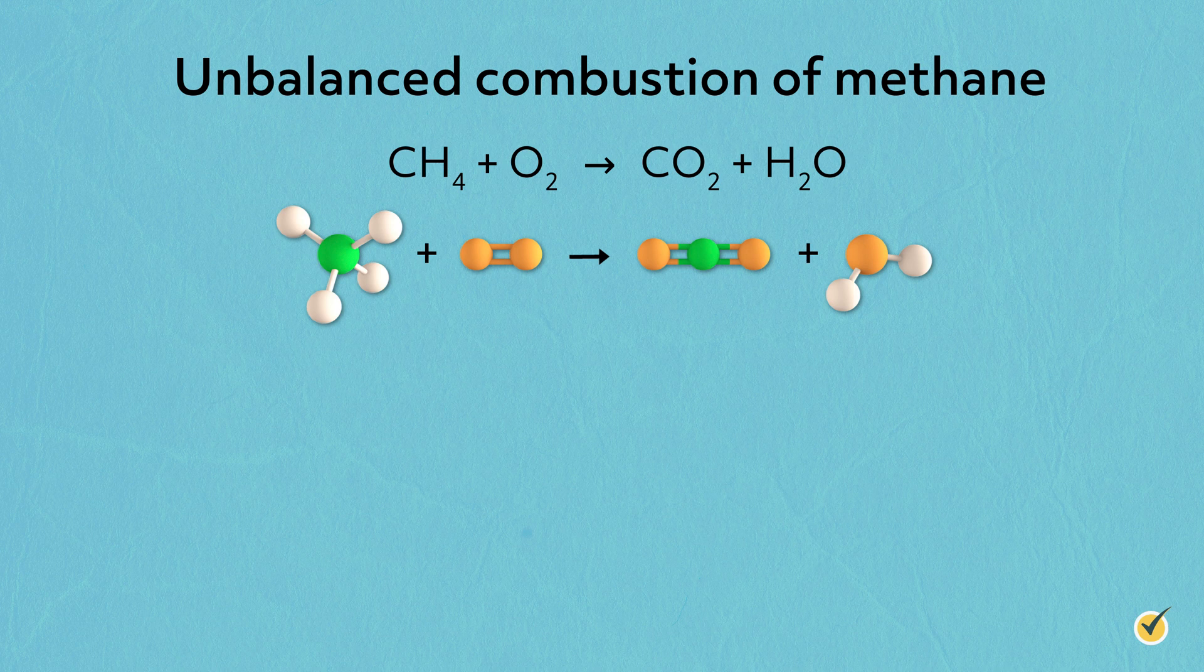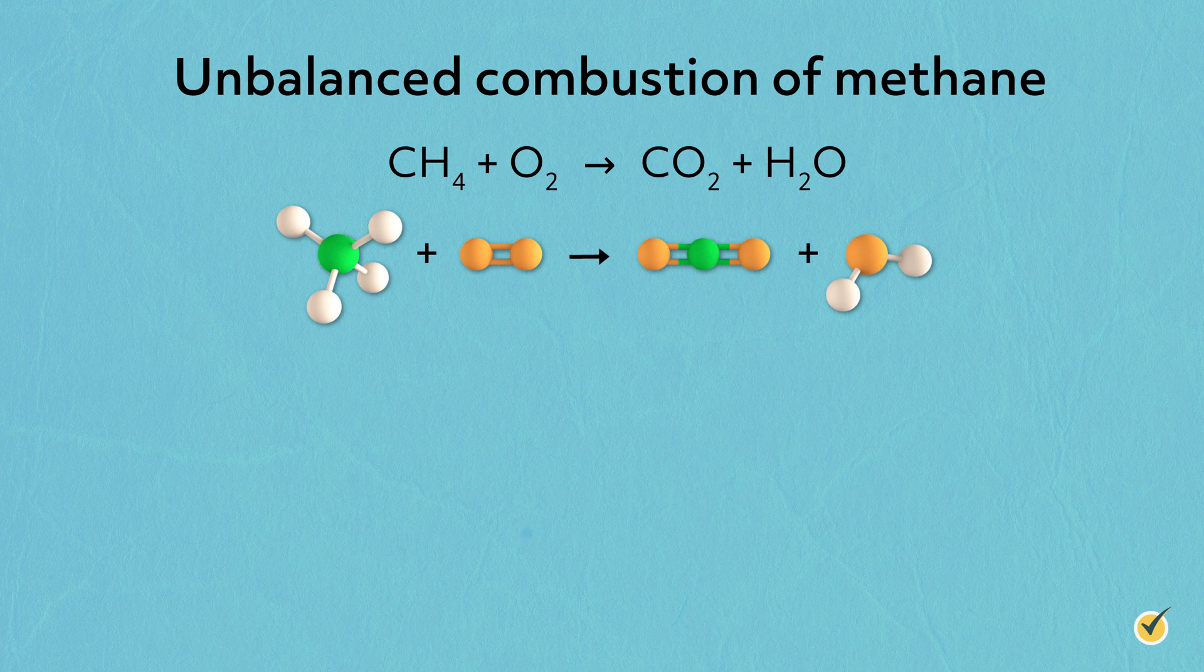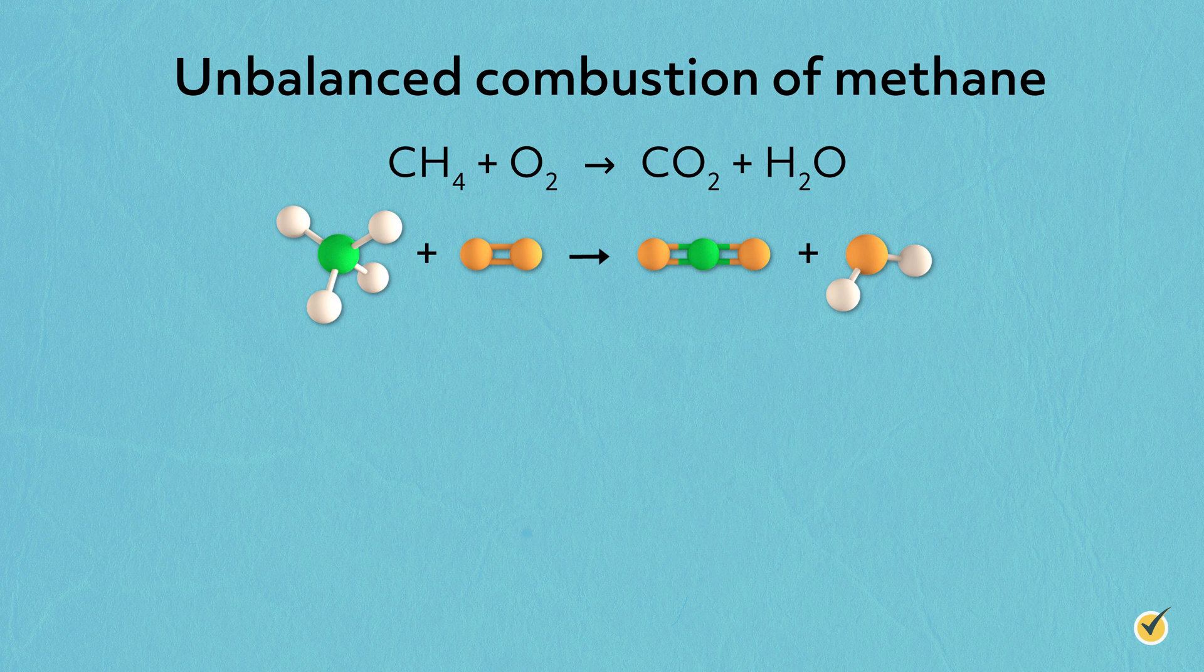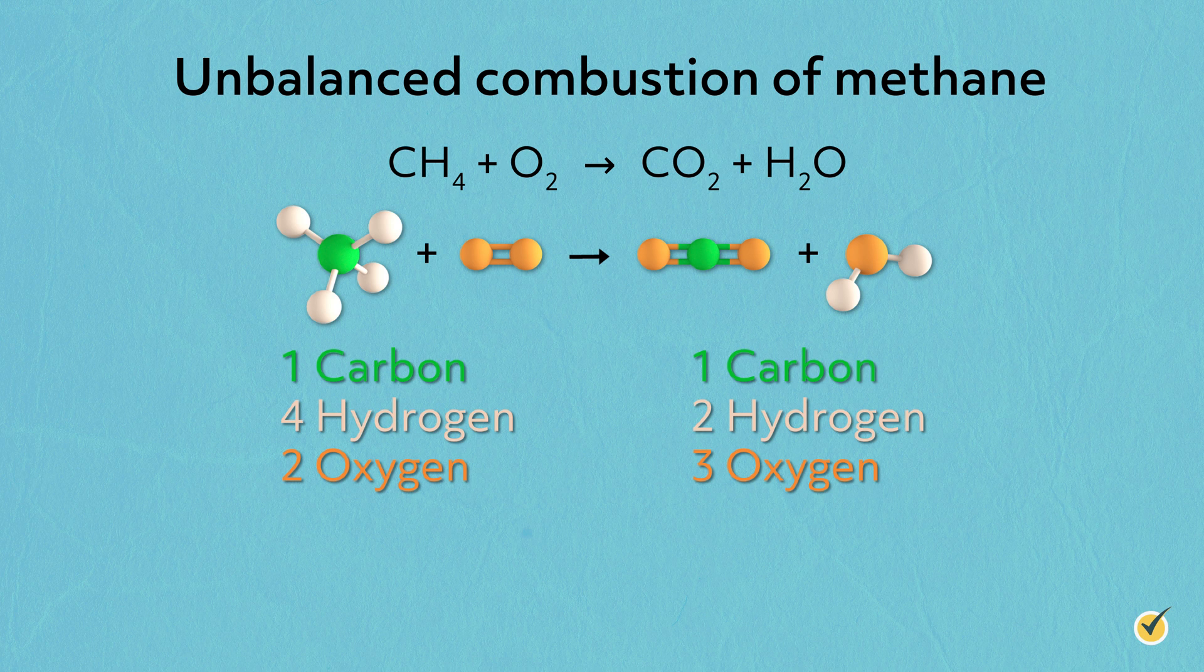Methane reacts with oxygen to produce carbon dioxide and water. Now, while this equation accurately represents the chemical identity of the reactants and the products, it's unbalanced. If we count the atoms on each side of the reaction, we'll discover they are not equal.